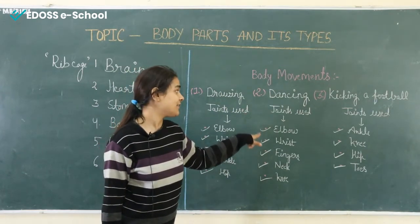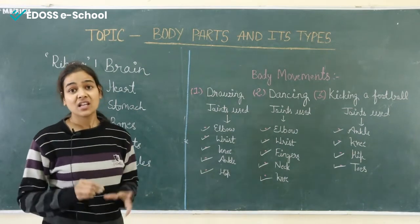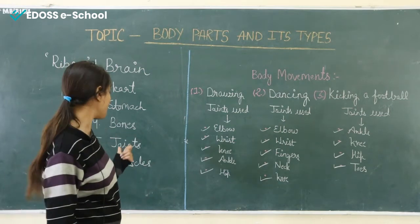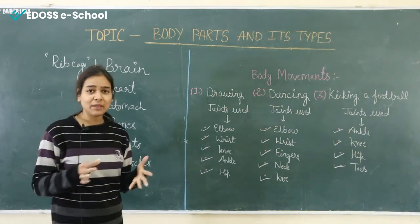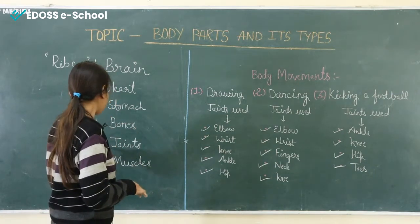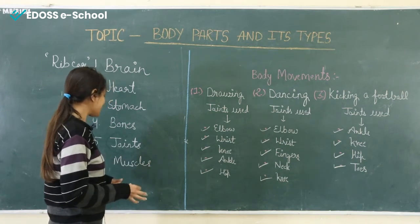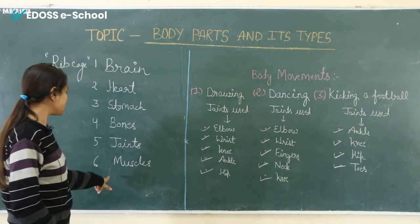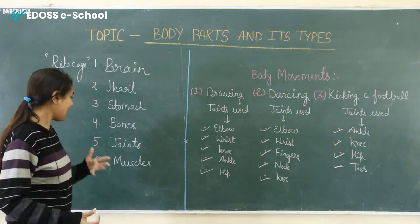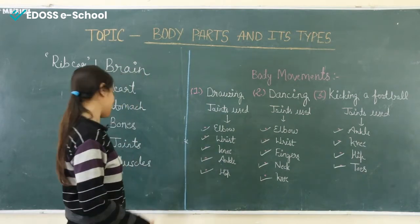Now let's talk about muscles. What are muscles? Muscles are connected to our bones and can be found below our skin. Muscles and bones protect our body system and help to protect our body from getting damaged. Heart and stomach are made up of muscles.